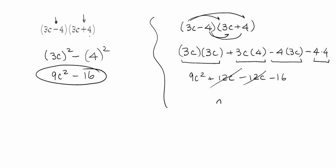So these two went away and I simply have 9c squared minus 16. So I could have done it the long way or if you recognize that these are conjugates of each other, you just take the first term, square it, and then subtract the square of the second term.